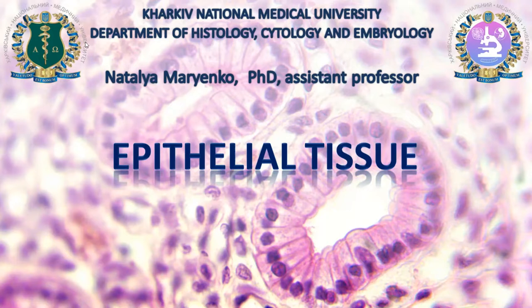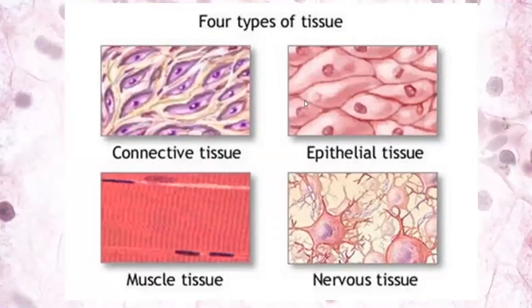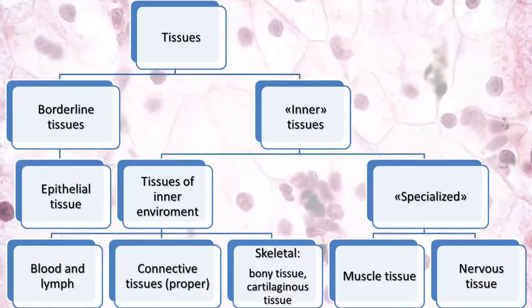Today we will talk about epithelial tissue. Epithelial tissue is one of the kinds of all tissues. At school you studied that there are four types of tissues: connective tissue, epithelial tissue, muscle, and nervous tissue. Those are big groups which include different tissues, and we usually use another classification which has more types of tissues.